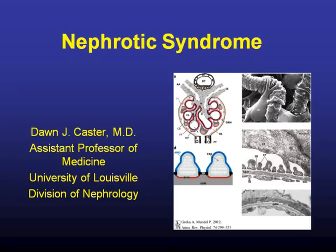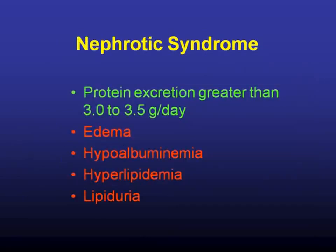Here I have some beautiful pictures of the podocyte, which is important in any proteinuric kidney disease, especially with nephrotic syndrome. You have to have significant podocyte damage in order to have nephrotic syndrome. Here you have normal podocytes on electron microscopy and effaced podocytes. Here's a scanning EM of the podocyte with its foot processes over the capillaries. So you can imagine if they're damaged, protein slips through and that's how we develop nephrotic syndrome.